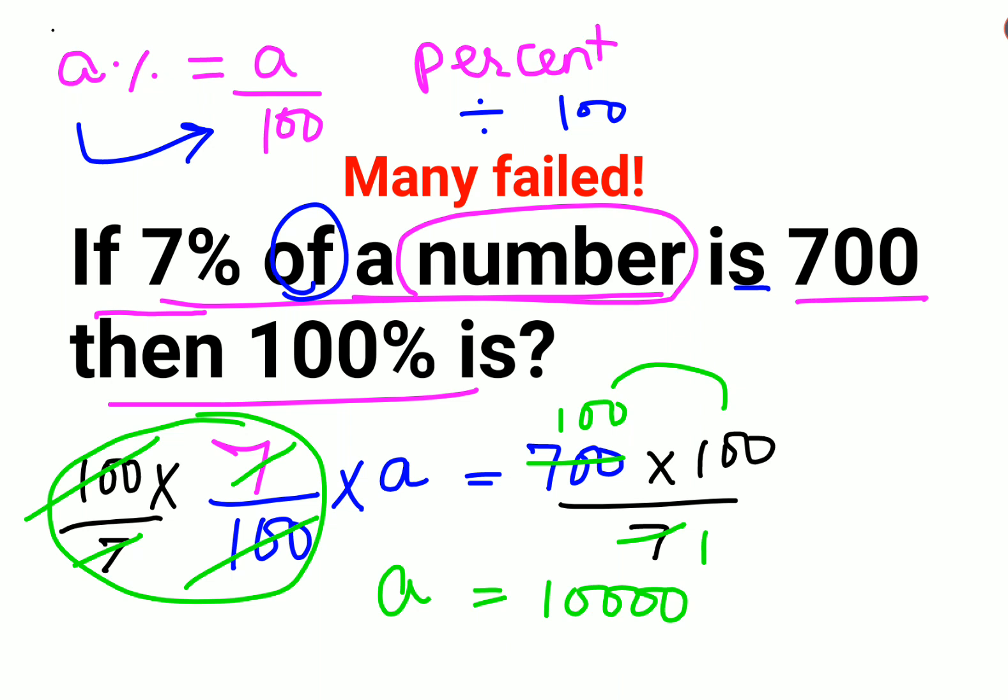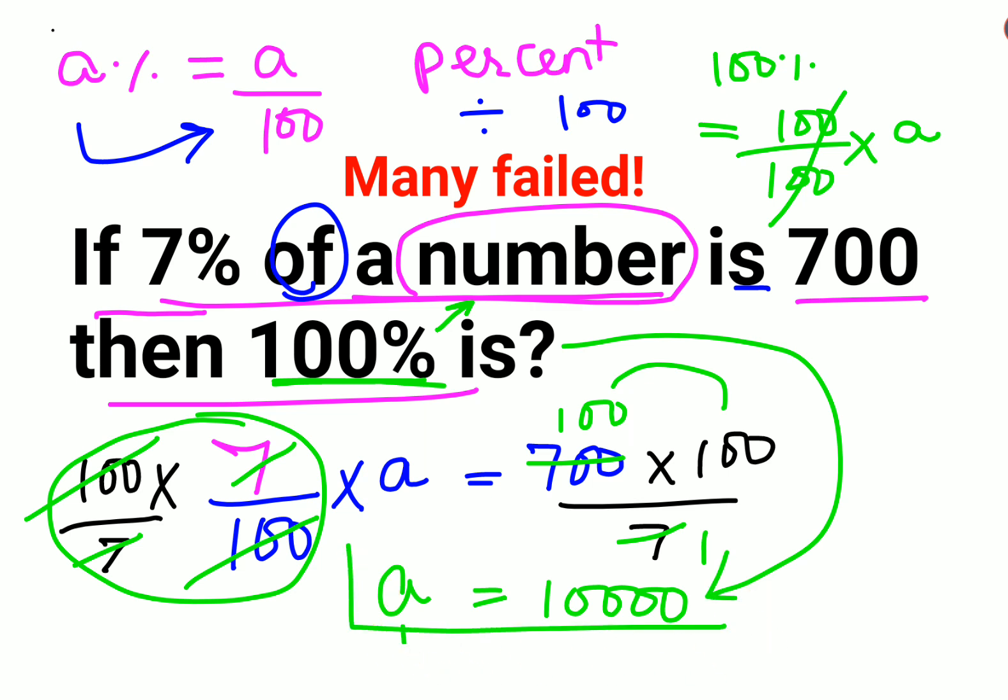Now see, this is not what they are asking. They are asking 100% of that number. So 100% can be written as what? 100 upon 100 of a. So basically, this gets cancelled. So the final answer is: the number is 10,000.